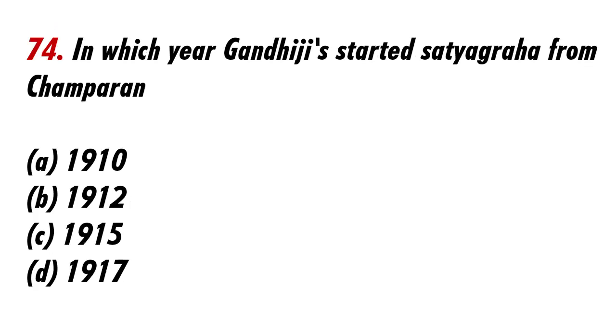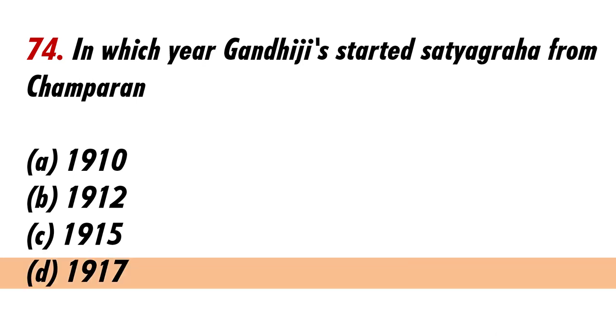In which year did Gandhiji start Satyagraha from Champaran? Answer D: 1917.